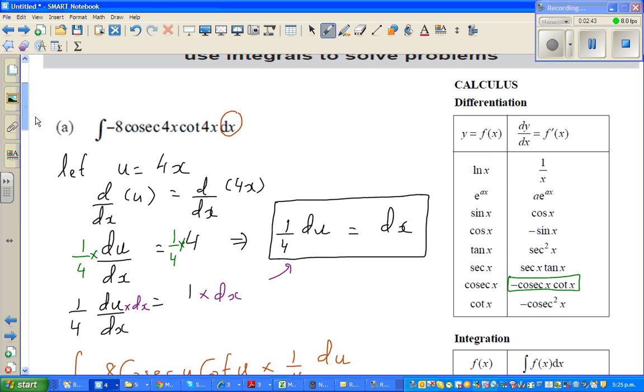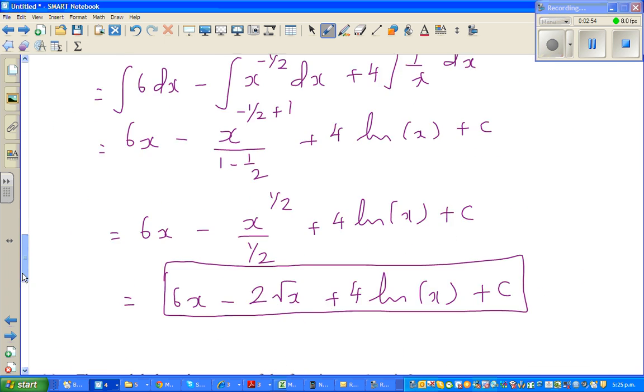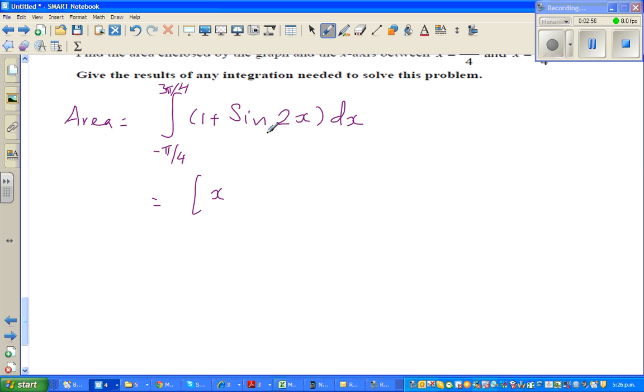So in the formula sheet, for integration, you look backwards. Integration of minus sine x is cos x. So integration of sine x is minus cos x. So here, integration of sine 2x would be minus cos 2x over 2. This is a reverse chain rule.